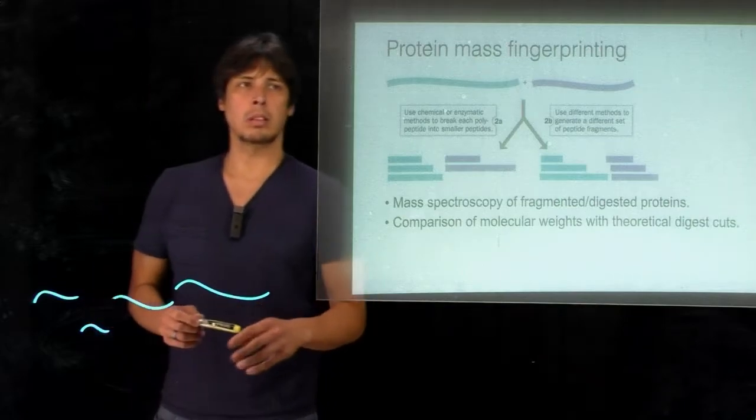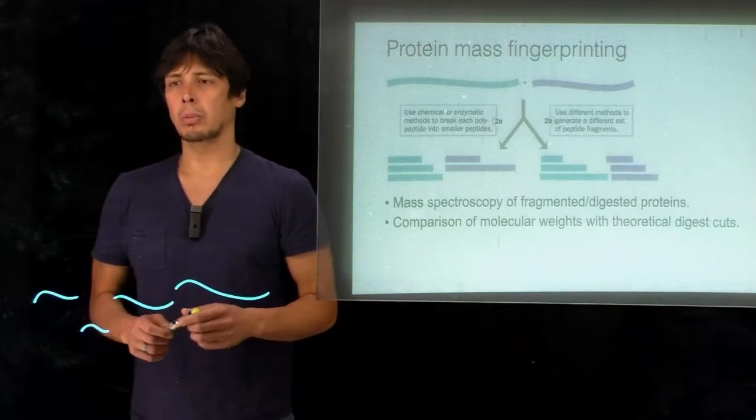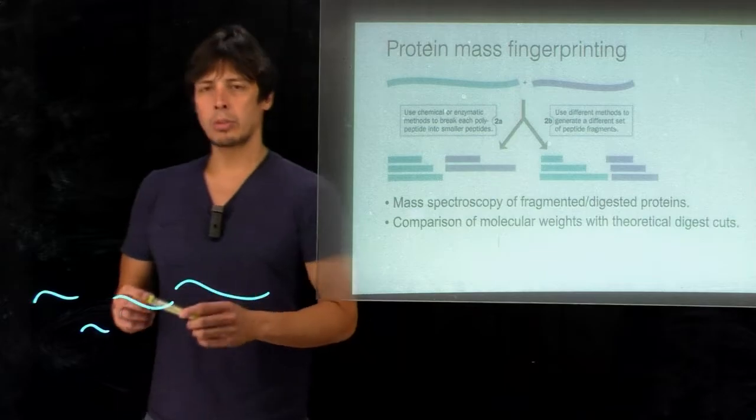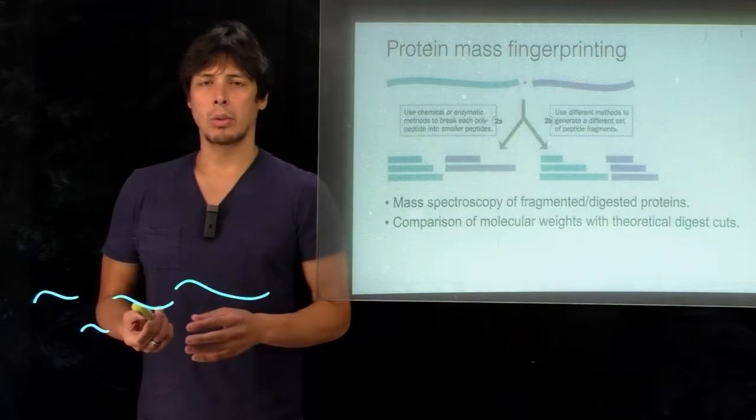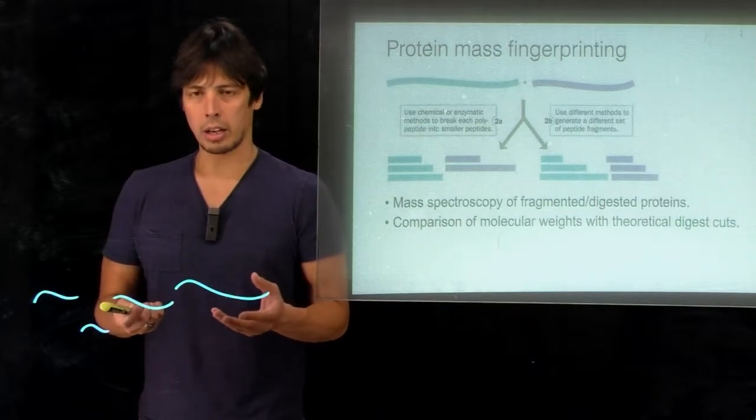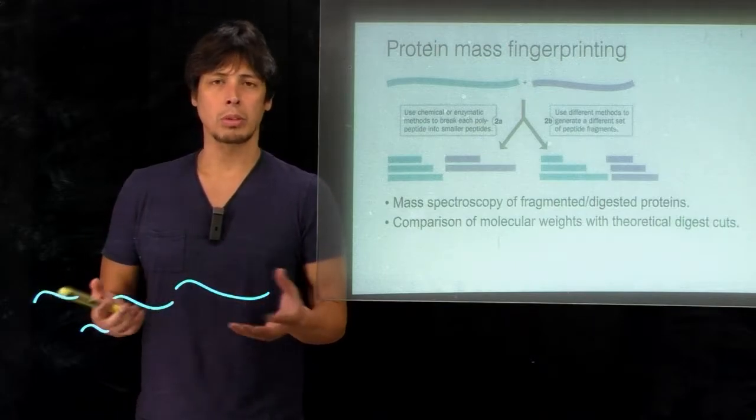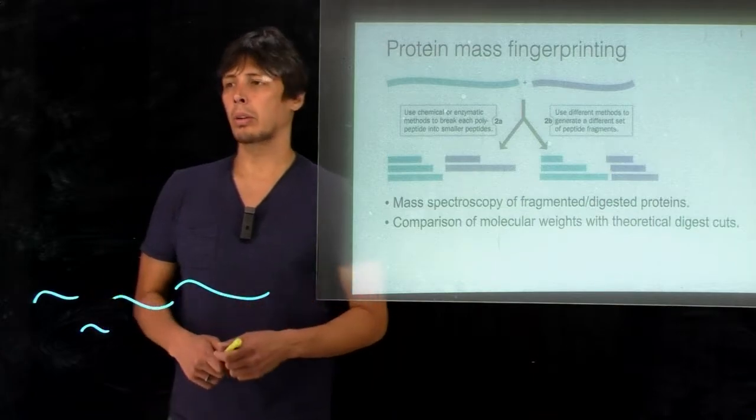So what helps is a technique called protein mass fingerprinting. What we can do is, because now we can get a lot of sequencing data, which gives us information about DNA that codes for different proteins inside the genome of many organisms.